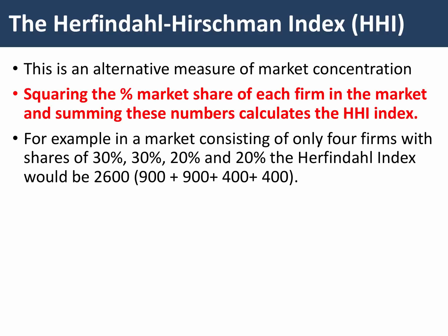There's a second measure of market concentration which some students come across. Most students will focus on the concentration ratio, but let's spend a couple of minutes thinking about something called the Herfindahl-Hirschman Index, or HHI for short. This is an alternative measure of market concentration, and the formula for calculating it is a little more complicated. What you do is square the percentage market share of each firm in the industry and then add those numbers together — that gives you the HHI index.